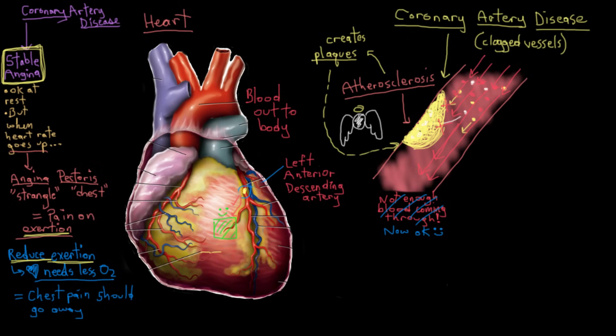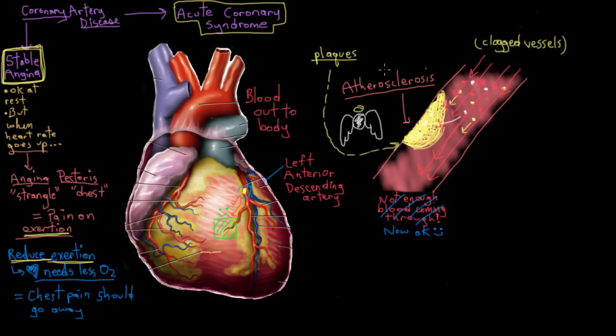Now, things can get a little bit worse than that, and when they get worse, they can result in a suite of—not sweet as in sweet, I want that, because you definitely don't want this—but it refers to a set of conditions, diseases you can get called acute coronary syndrome. And acute coronary syndromes can be further subdivided into something called unstable angina, and then you have your heart attacks.